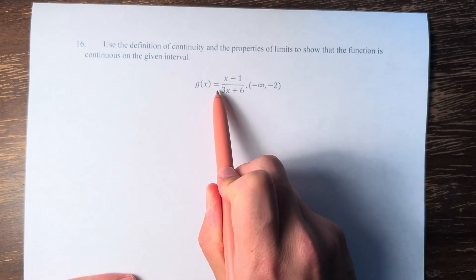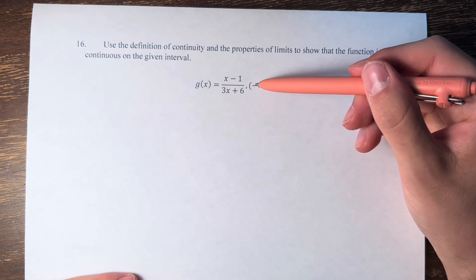So we have g of x is equal to x minus 1 over 3x plus 6, and we're looking at the interval from negative infinity to negative 2.